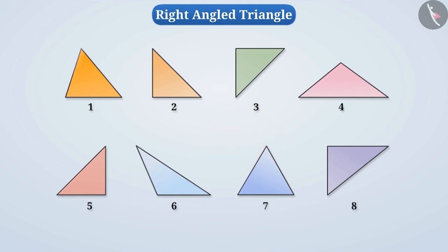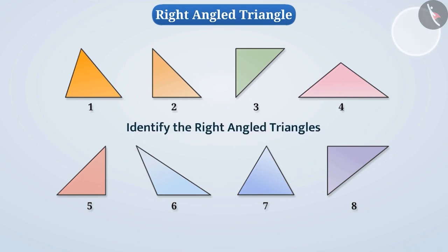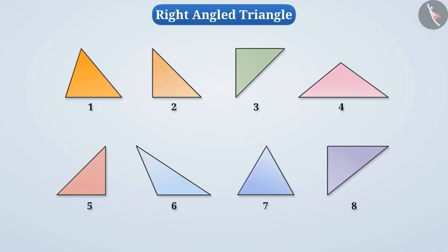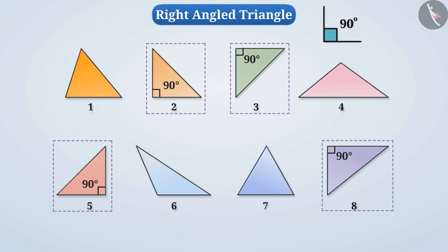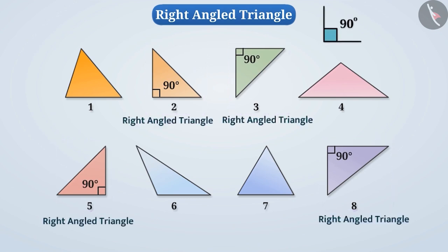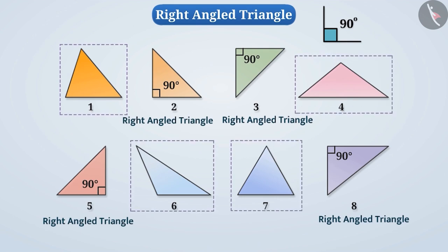As you can see, some triangles are shown here. Pause the video and find out which triangle is a right angle triangle. As you can see, the triangles shown in figures 2, 3, 5 and 8 have one angle as a right angle, so these are right angle triangles. Consider figures 1, 4, 6 and 7 — none of the angles here is a right angle, therefore we cannot call them right angle triangles.